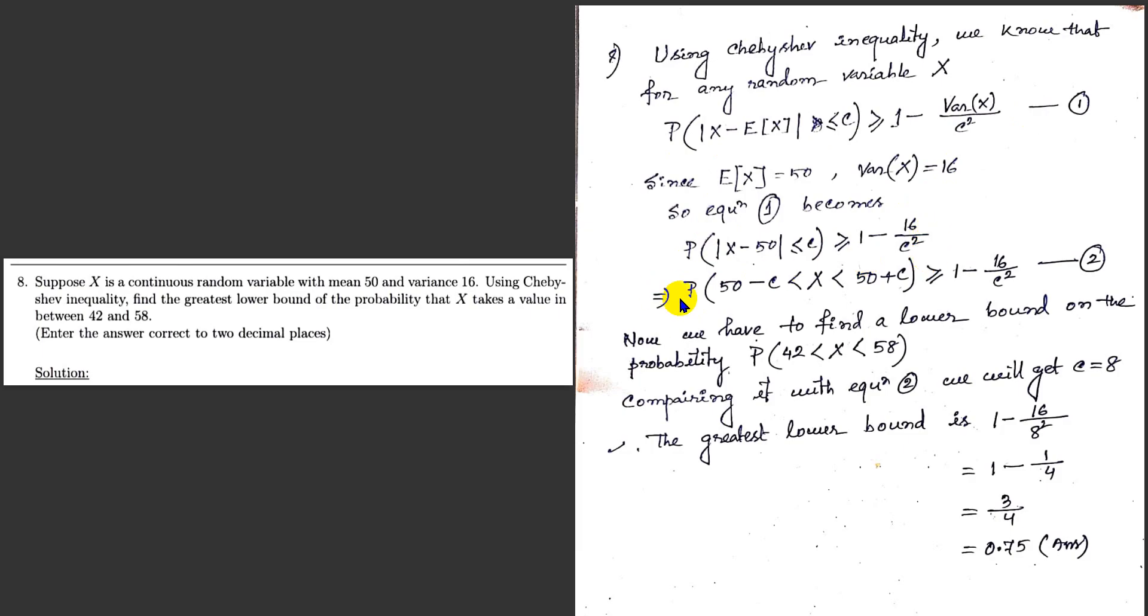After simplifying, we get probability of 50 minus c less than X less than 50 plus c is greater than or equal to 1 minus 16 by c squared.